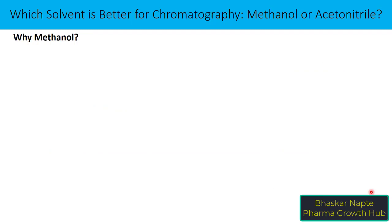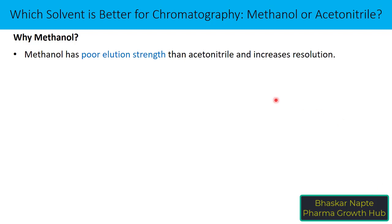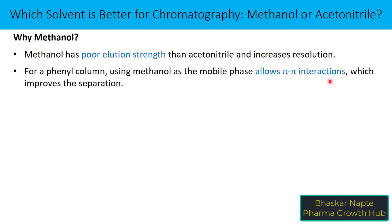Now, what are the advantages of methanol over acetonitrile? Methanol has lower elution strength than acetonitrile, which increases resolution. So if you don't have a run time constraint but resolution is crucial, methanol can certainly help. For a phenyl column, using methanol as the mobile phase allows pi-pi interaction, which improves separation. When using a phenyl column with acetonitrile, the acetonitrile itself can interact with the phenyl phase via pi-pi interaction, limiting the pi-pi interaction between the compound and the column, which can reduce retention time or result in poor resolution. In that case, methanol should be preferred.